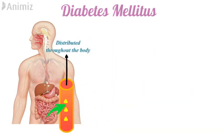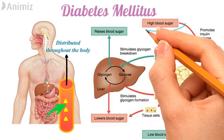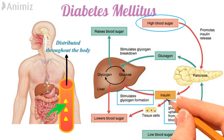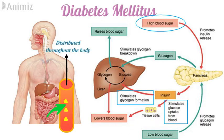Now let's see what happens when blood glucose level increases or decreases from a certain concentration. When there is a high blood sugar level, beta cells of the pancreas secrete a hormone called insulin into the blood vessel, which stimulates the uptake of glucose from the blood by other cells of the body. Insulin also stimulates glycogen formation, so glucose is stored as glycogen in the liver, and as a result, the blood glucose level decreases.